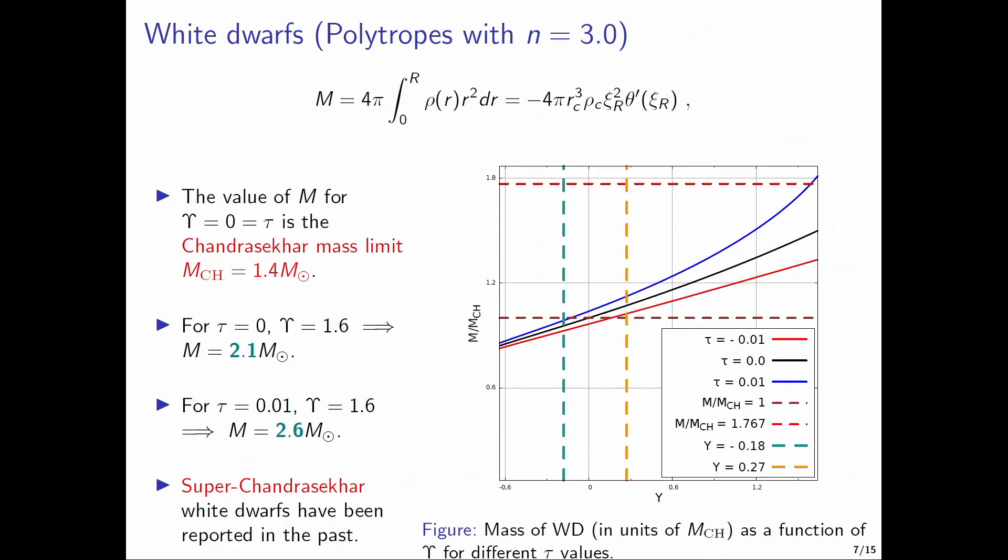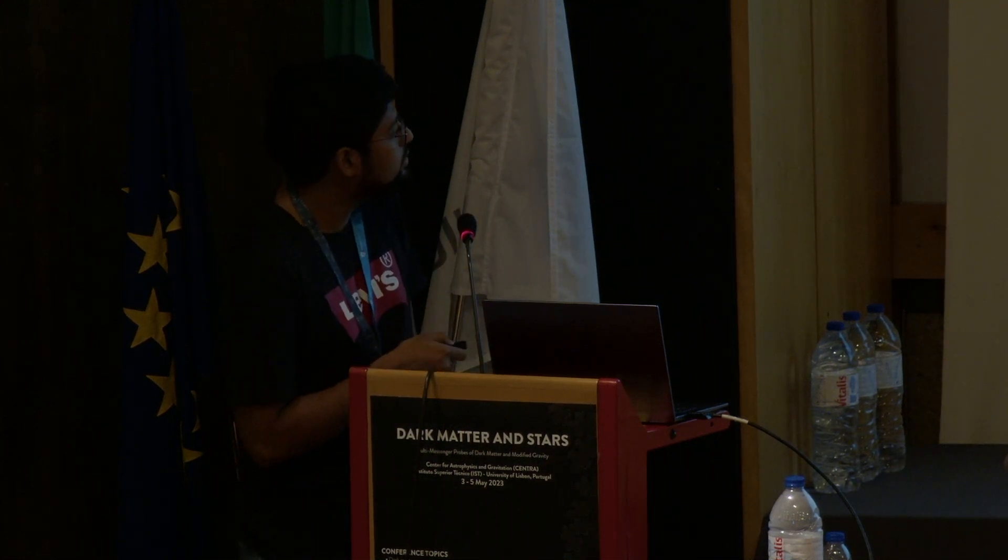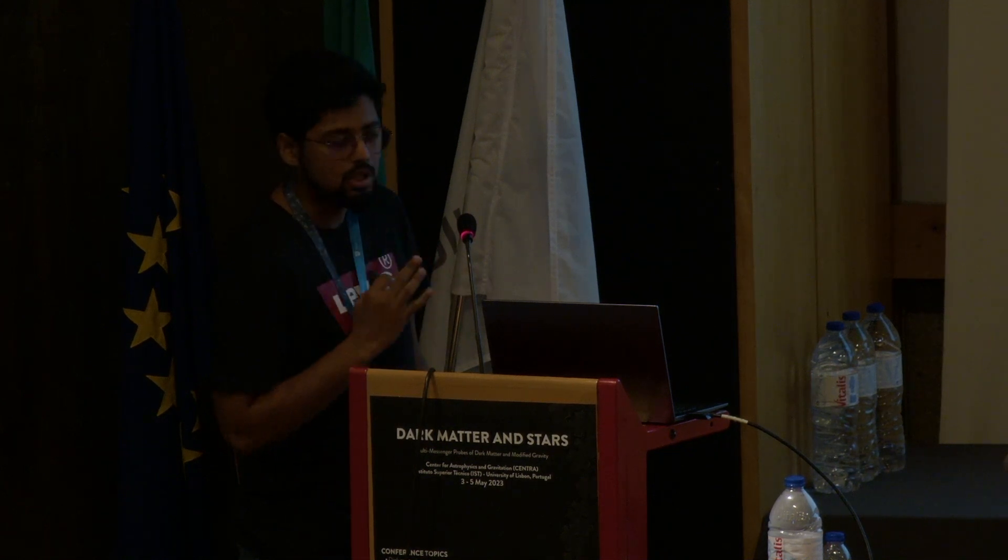We also study their implications on white dwarfs where we have obtained white dwarfs having mass higher than the Chandrasekhar mass limit of 1.4 for positive values of the anisotropy and modified gravity parameters, and this is important in light of the fact that recent observations of super luminous type 1a supernovae do indicate that there exists super Chandrasekhar white dwarfs, although this observation still needs more data to conclude. Anyways we have obtained these things not from binary systems but for a lone white dwarf.